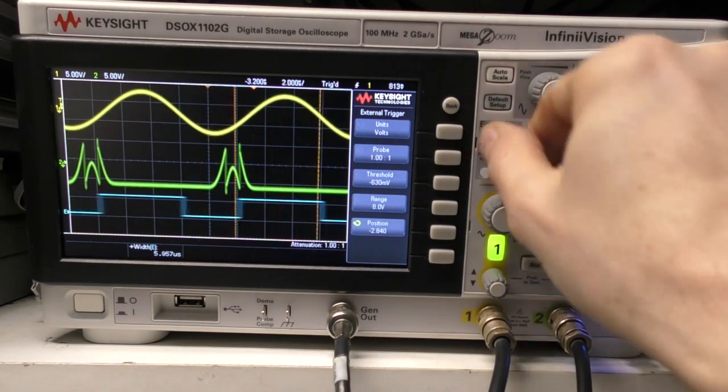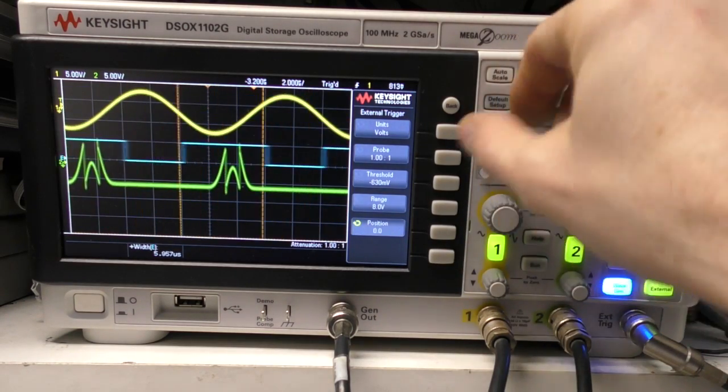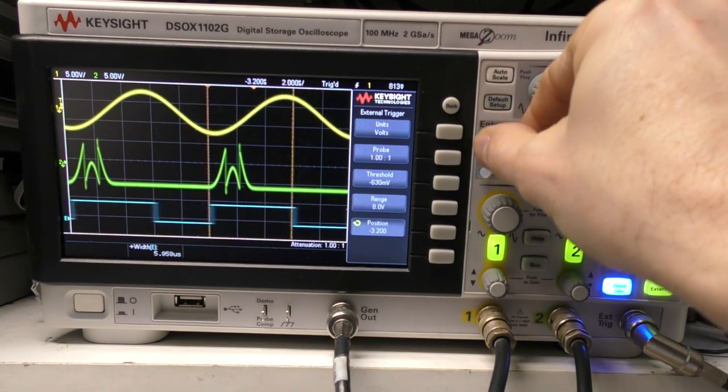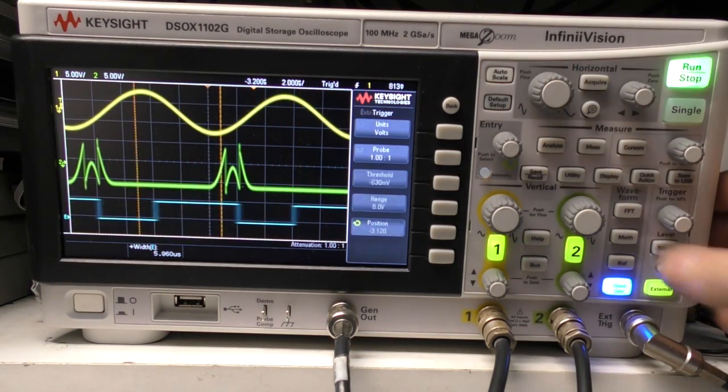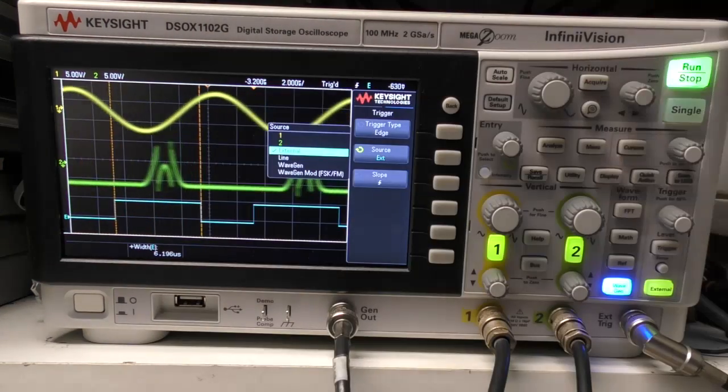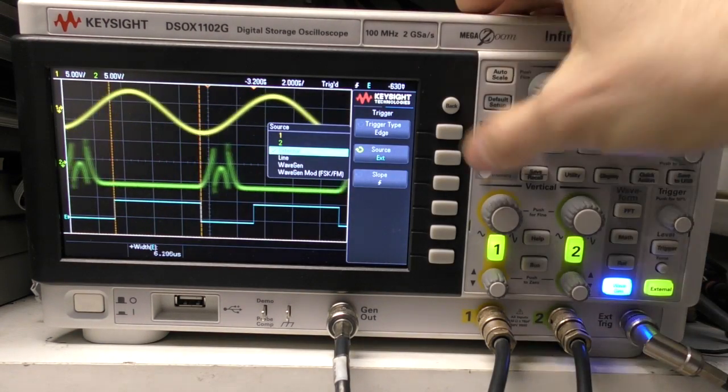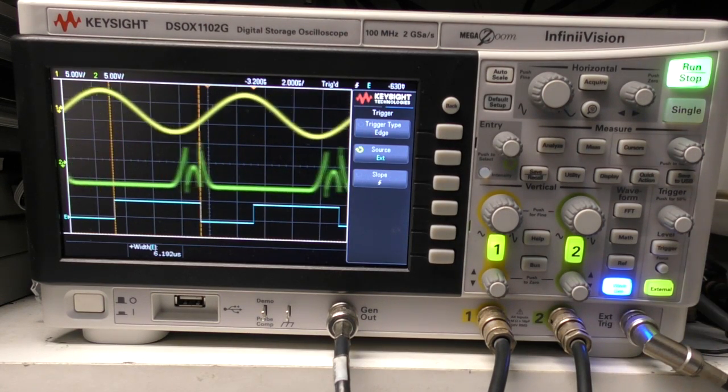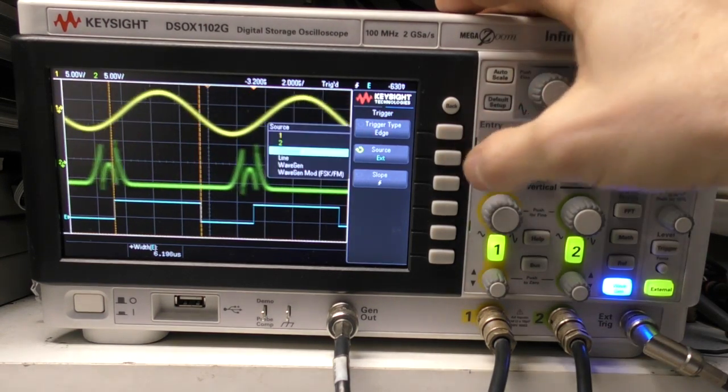And obviously, you've got position control, so you can move it up and down. It's slightly less convenient than having an individual control, but you can still do that. Now, of course, you can trigger on this. You just select it as your trigger source, so now I'm triggering on that source. External trigger is one of the things it can do, but by no means all of it.